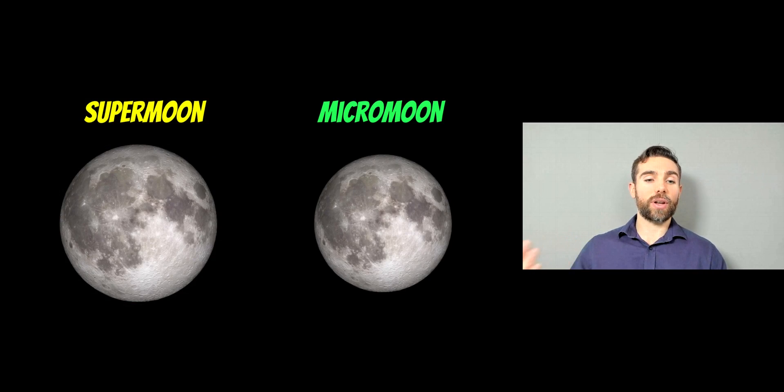So the direct comparison between the two. This is a size comparison between a supermoon and a micromoon. And that's the apparent size difference between the two as we may see it in our sky. So you can see the supermoon is obviously quite a bit bigger than the micromoon. And if you go and have a look at either one of those, you should be able to see a reasonably obvious difference in size between those two.